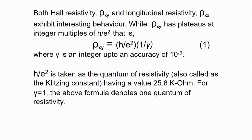To summarize: the Hall resistivity rho_xy and the longitudinal resistivity rho_xx exhibit very interesting behavior. While rho_xy has plateaus at integer multiples of h/e², that is rho_xy = h/(νe²) where ν is an integer, accurate to 10^{-9}.